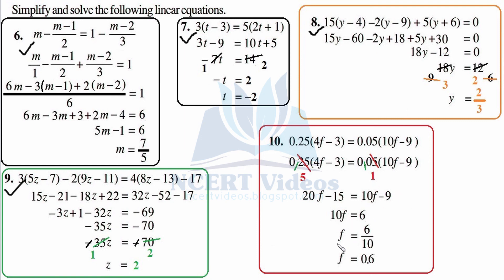f equals 6 over 10, since we transposed 10 to the right-hand side by division. Since the question was in decimal representation, let's express our answer in decimal. f equals 0.6. You write the number as it is — we have 6 — count the number of zeros in the denominator, we have 1, so place the decimal 1 place from the right towards the left: 0.6. So 0.6 is the decimal representation of 6 over 10. With this our question number 10 is completed, and that completes exercise 2.5, Mathematics Class 8, Chapter 2: Linear Equations in One Variable.